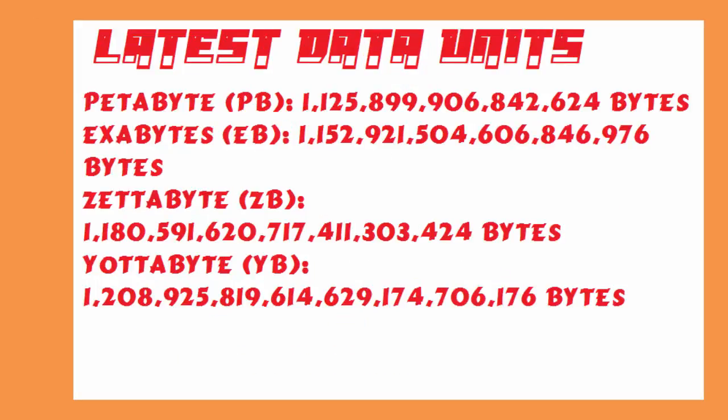Now I am going to show you the latest data units. First is petabyte — the memory size is enormous. Next is exabyte, or EB. You can see the house-filling memory size in bytes in this picture. Next is zettabyte, and yottabyte is the highest memory unit in the world. Mostly servers of Google, Facebook, and Twitter use this higher memory because they use thousands of gigabytes of data daily.